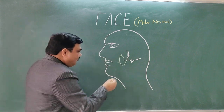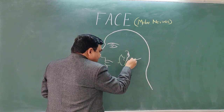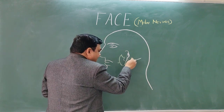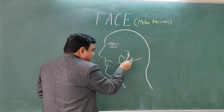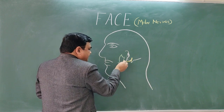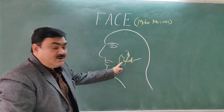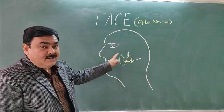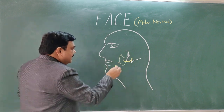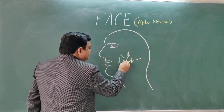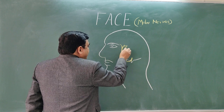Through this foramen, one nerve passes — this is the facial nerve. After passing through this foramen, it passes through the substance of the parotid gland, but it does not supply the parotid gland. Here it divides into five branches.